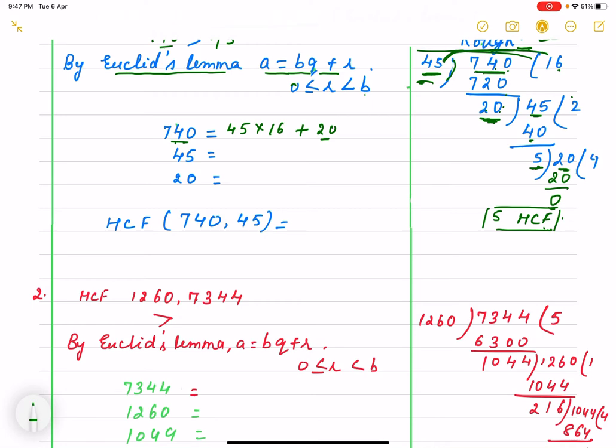It is 45 into 16 plus 20 that is divisor into quotient plus remainder. Same thing either you think about Euclid's lemma or we think about division algorithm. Same thing we are repeating it and we are writing the numbers. That means it is 45 into 16 plus 20.